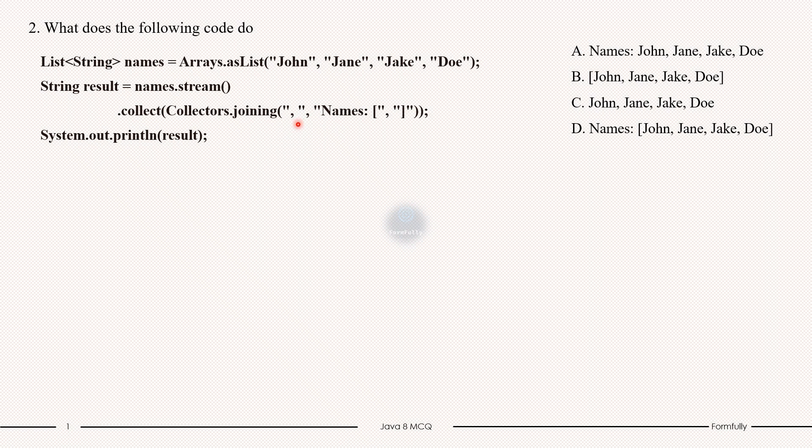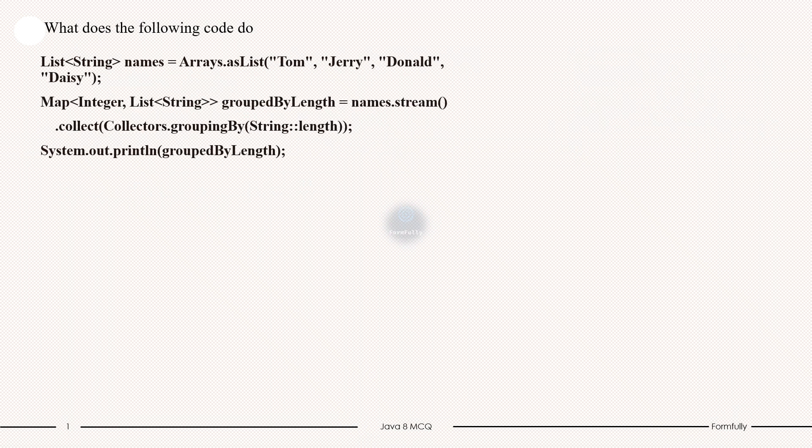So first argument, that is comma, specifies that the names should be separated by a comma and a space. Then second argument, Names, is a prefix added at the start of the result. And the third argument is suffix added at the end of the result. So the final result will look like: Names [John, Jane, Jake, Doe]. So option D is correct.